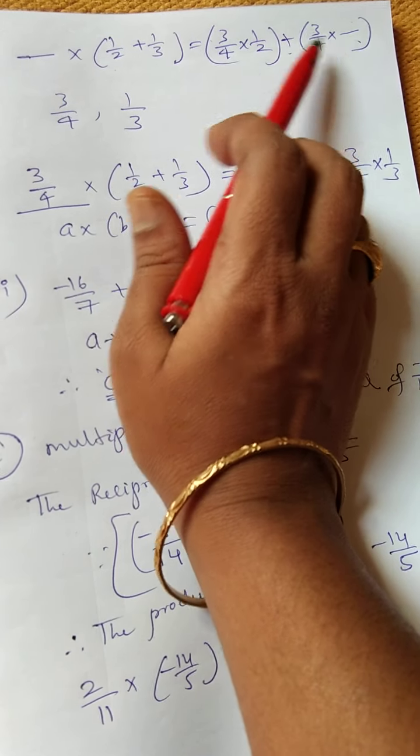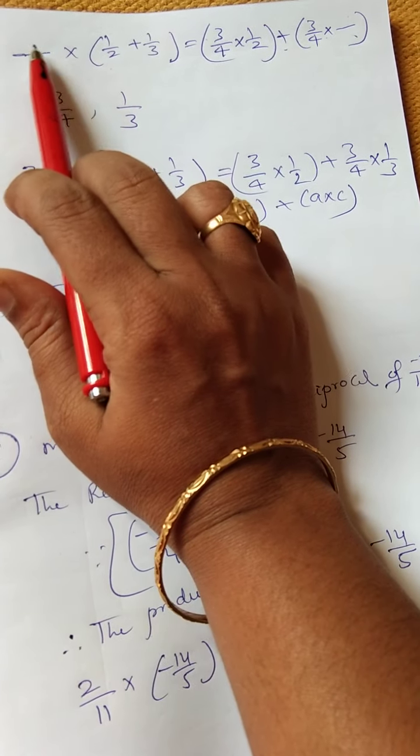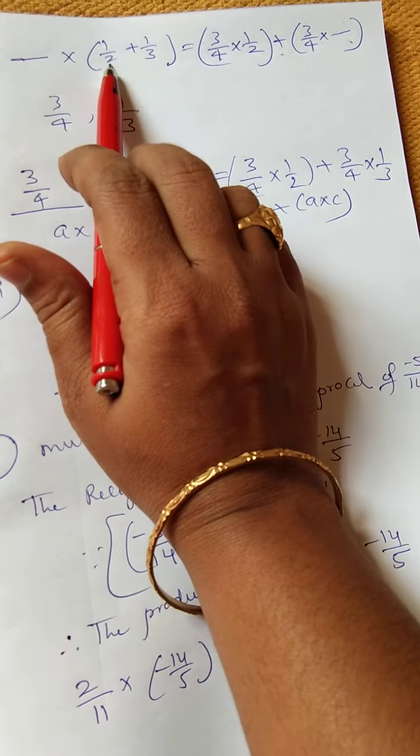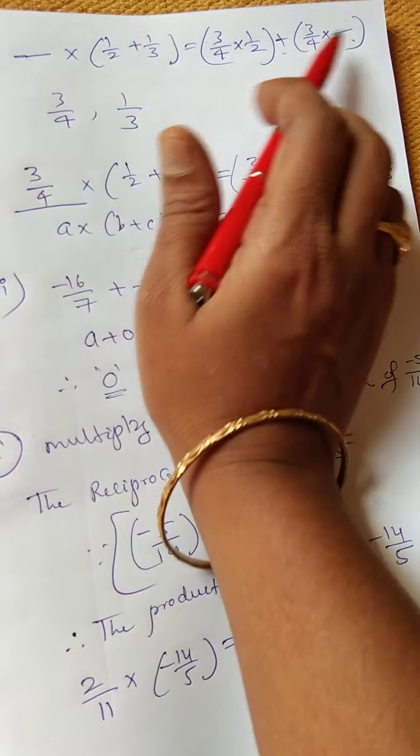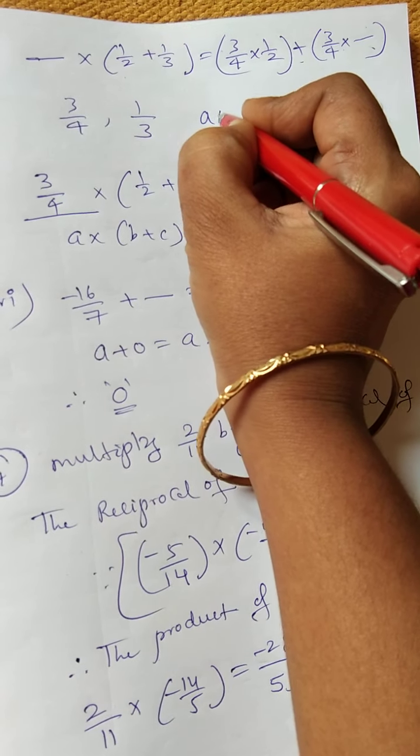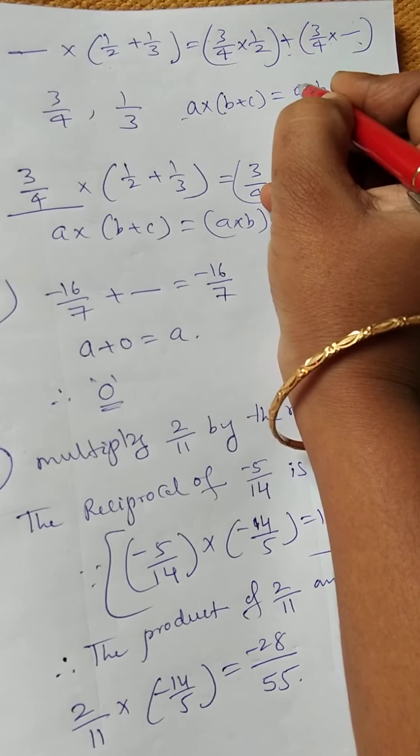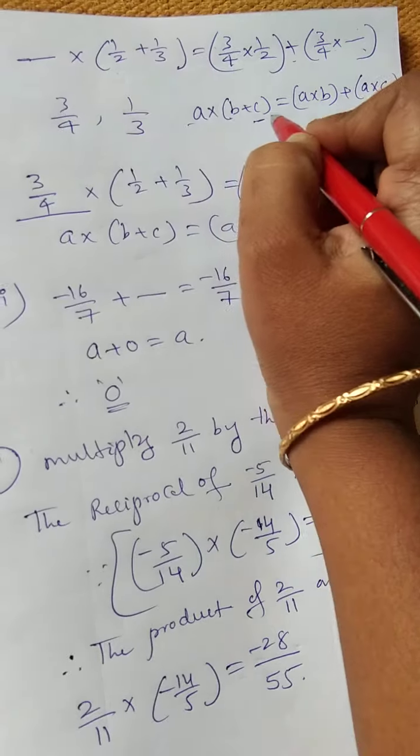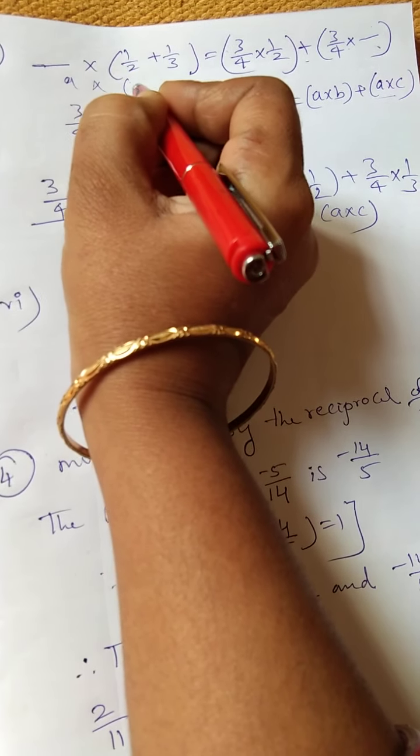For the second blank, 3/4 must be multiplied with it. This uses the distributive property: A × (B + C) = A × B + A × C. Here 3/4 is A, and (1/2 + 1/3) is B + C. So 3/4 × 1/2 + 3/4 × 1/3. The second blank is 1/3. If you compare with the distributive property, C is 1/3.